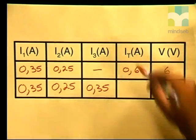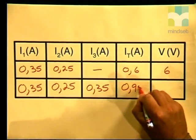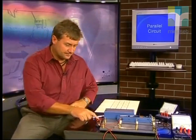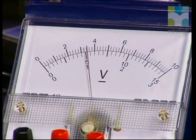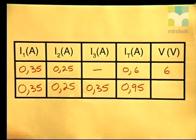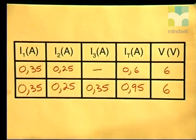Therefore for I total, we write down 0.95 amperes. I have now connected the voltmeter across all three resistors in parallel — the needle on the voltmeter has stopped on the 6 volt mark. Voltage is 6 volts.